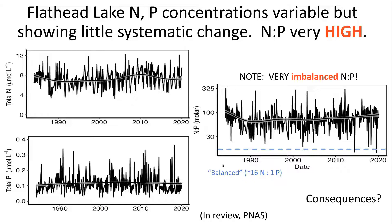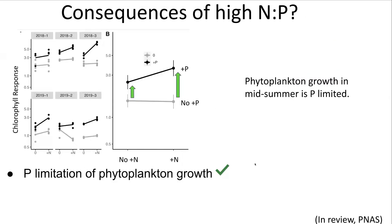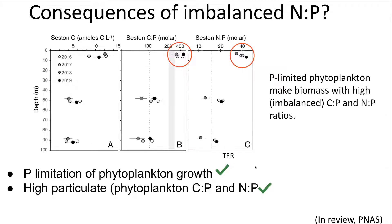What we see in Flathead Lake is that the ratio is extremely imbalanced — there's much more nitrogen relative to phosphorus than we might normally see. A more balanced N-to-P ratio would be about 16 nitrogens for every phosphorus atom, which is more or less what we see in the ocean and what we think basic cellular requirements are for many organisms. This lake is extremely imbalanced in the direction of nitrogen with very high N-to-P ratios. The consequence is that phytoplankton growing in that water run out of phosphorus first.